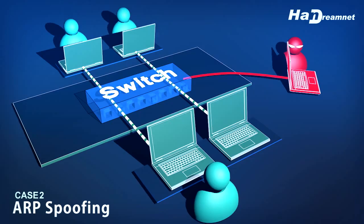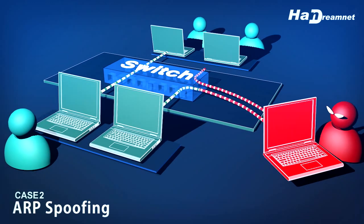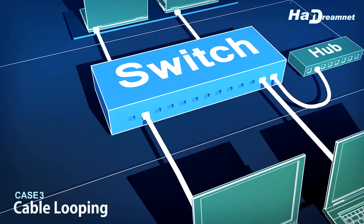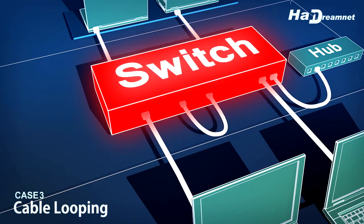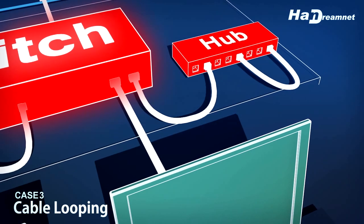Case 2: ARP spoofing — voice communication, CCTV image, and personal confidential information might be compromised through ARP spoofing. Case 3: Cable loop — it happens often in the field due to human error, but the impact of cable loops is beyond what you expect.